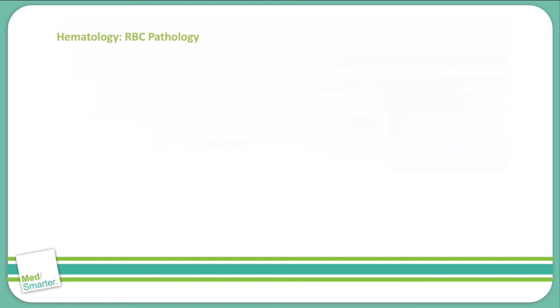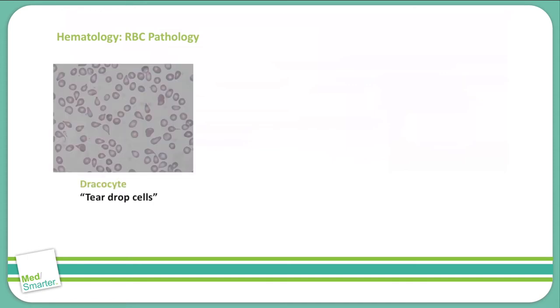Let's look at some red blood cell pathologies. There are several different types of issues that can go on with the red blood cells, but some of the most high yield are the following.